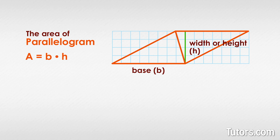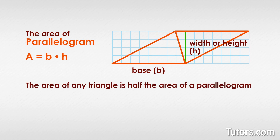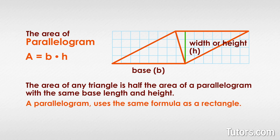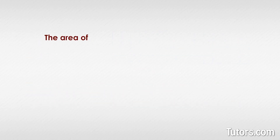If you divide a parallelogram along a diagonal, what do you have? Two triangles. That means the area of any triangle is half the area of a parallelogram with the same base length and height. A parallelogram uses the same formula as a rectangle, so the area of a triangle is half the base multiplied times the height.